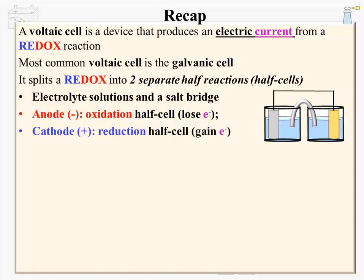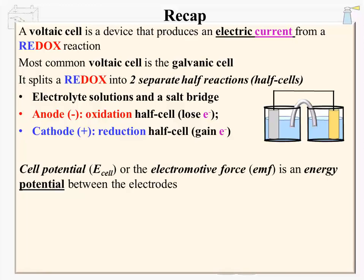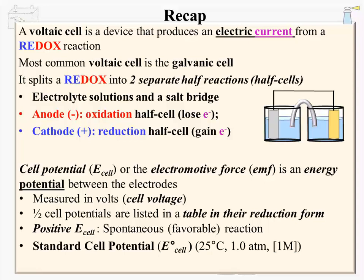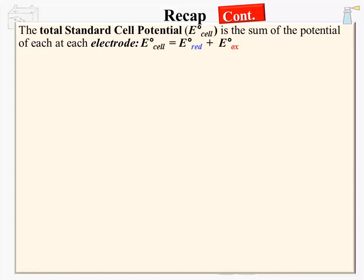The negatively charged anode is the electrode of the oxidation half-cell — it loses electrons. The cathode is the electrode of the reduction half-cell — it gains electrons. The cell potential, the E-cell, or the electromotive force (EMF), is an energy potential between the electrodes. It is what pushes the electrons along the circuit and is the energy that can be harvested from a galvanic cell. Potential is measured in volts — it is called the cell voltage. Half-cell potentials are listed in the table in their reductive forms. If the potential for the E-cell is positive, the reaction is spontaneous or favorable; if negative, it will require an outside energy source. The standard cell potential, EO cell, is where the conditions meet standard state. The total standard cell potential is the sum of the potential at each electrode: total EO cell equals EO reduction plus EO oxidation.